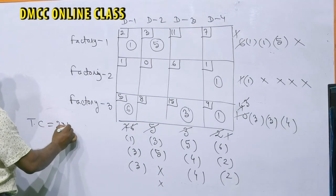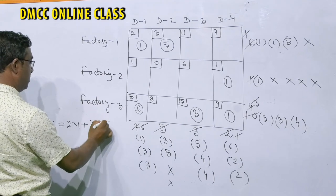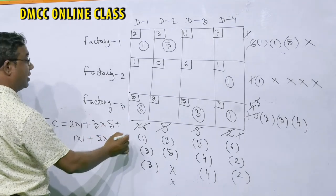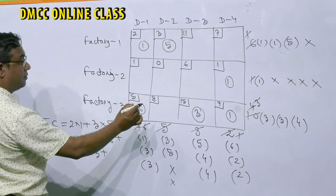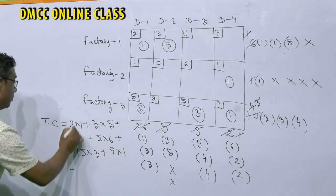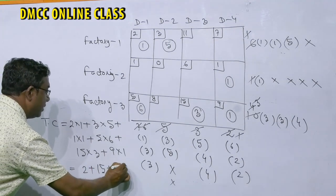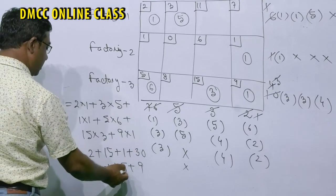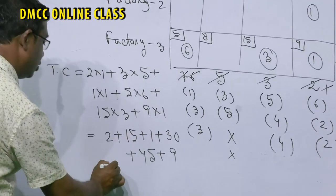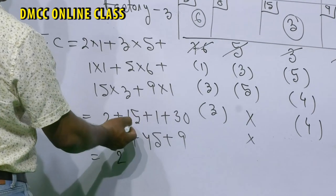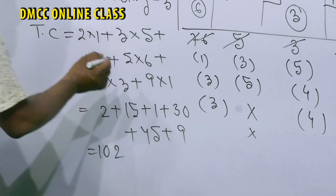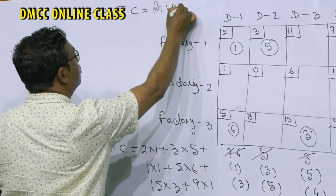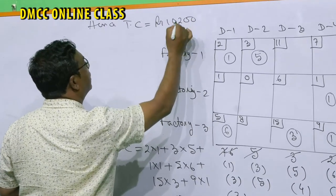Now let us find the transportation cost: (2×1) + (3×5) + (1×1) + (5×6) + (15×3) + (9×1) = 2 + 15 + 1 + 30 + 45 + 9 = 102. Multiplying by 100, the total transportation cost is rupees 10,200.